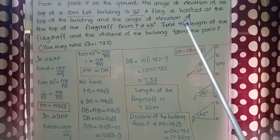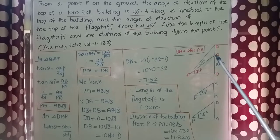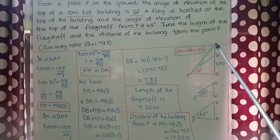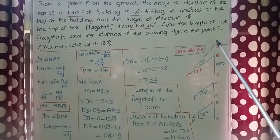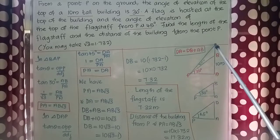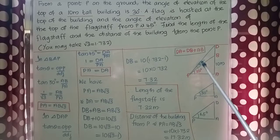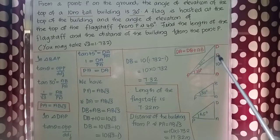Based on the information given in the question, a figure is drawn here. AB is the building with height 10 meters. B is the top of the building. On the top of the building, there is a flagstaff — BD is the flagstaff and a flag is hoisted there. A person on the ground is looking at the top of the flagstaff at an angle of elevation of 45 degrees. From the same point, the person is looking at the top of the building at an angle of elevation of 30 degrees.